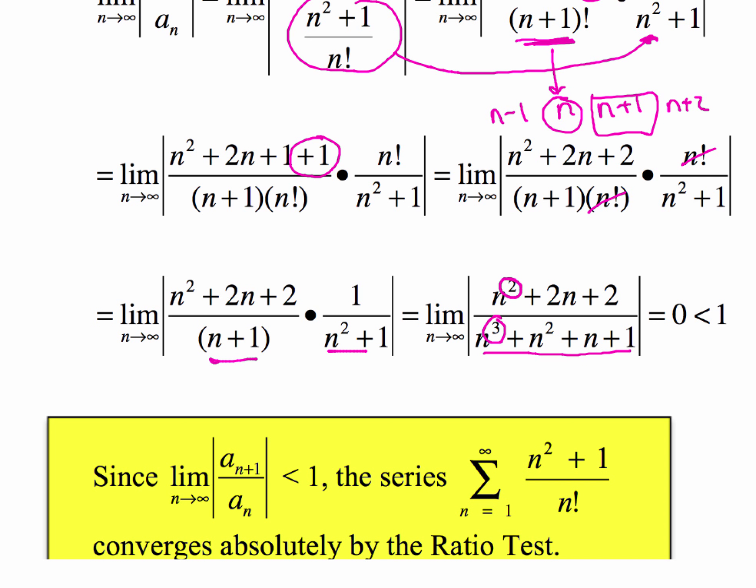so we have to say that the limit as n goes to infinity. And it's okay if you write that like this, a sub n plus 1 over a sub n, because otherwise if we wrote it with that funky fraction over a fraction like we did in the beginning, that's just gross. So just write it like this, and make sure you state that it is less than 1, then the series, in this case n squared plus 1 over n factorial, converges absolutely by the ratio test.